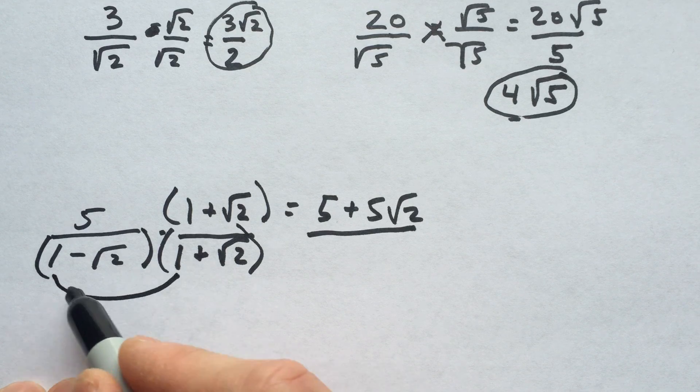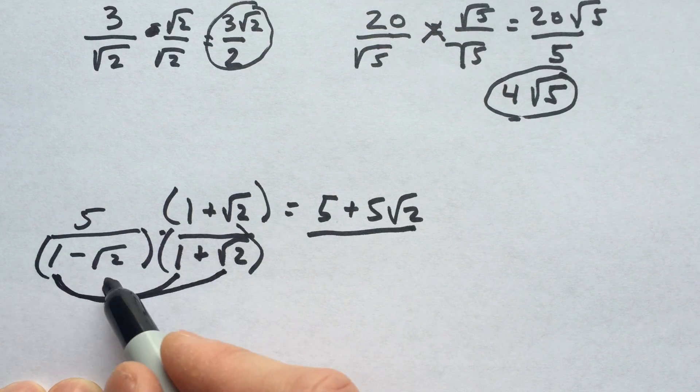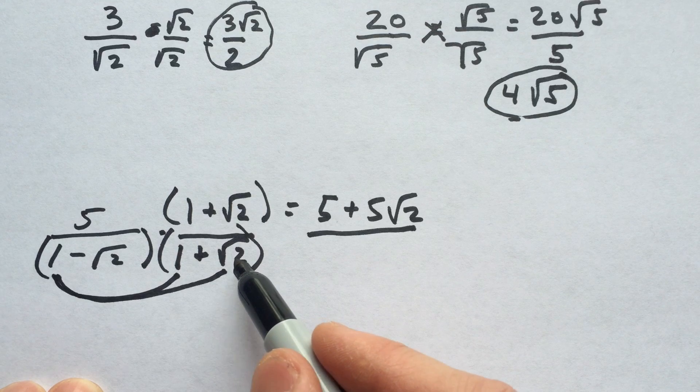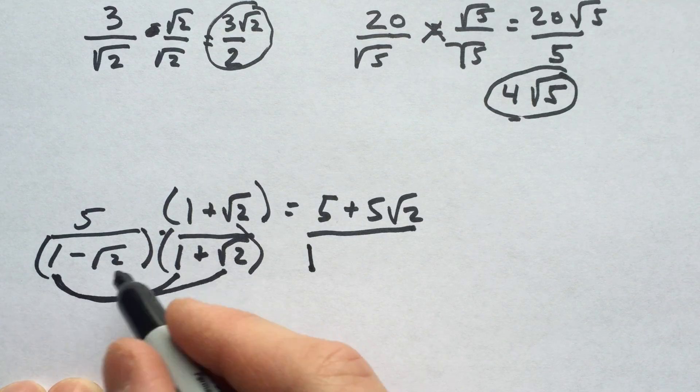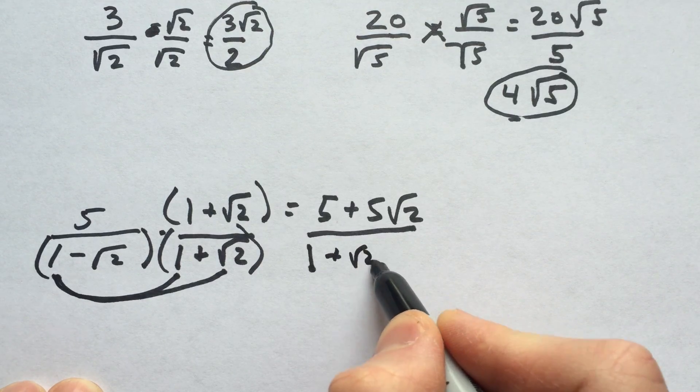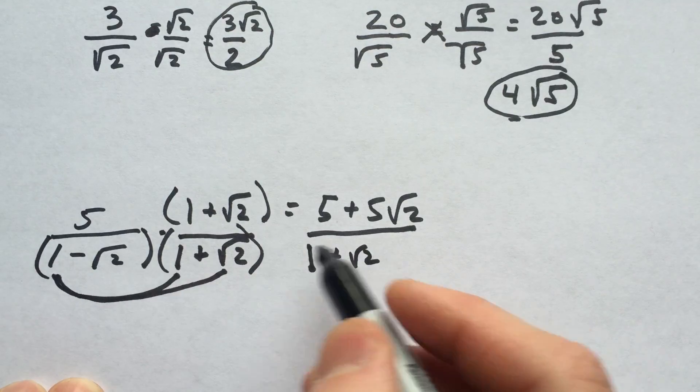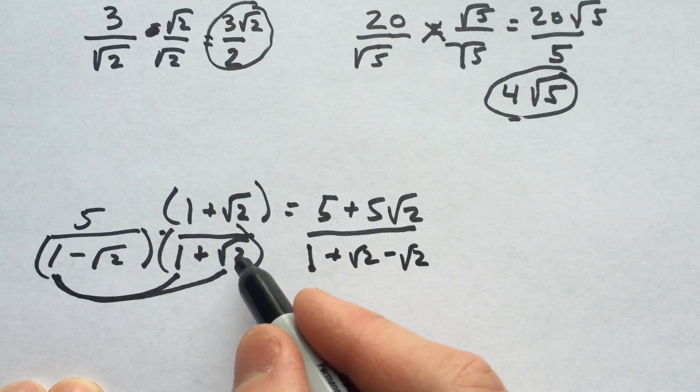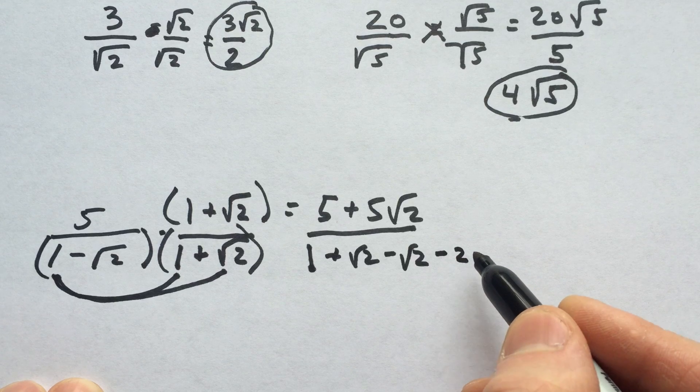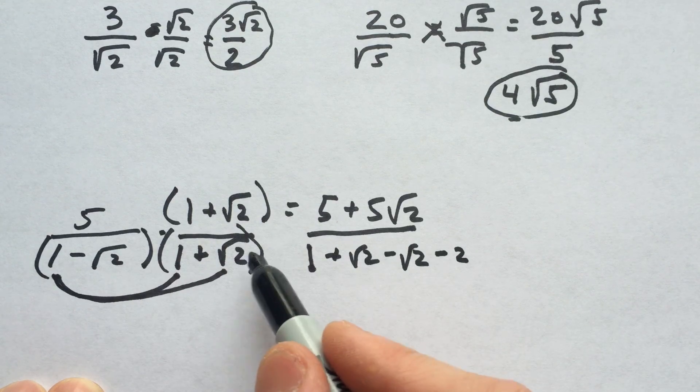Or you can think of doing the distributive property with the 1 and then with the negative square root of 2. So if we do that, we get 1 times 1, then 1 times root 2, which is plus √2. Inside, that gives you negative √2. And then the last term, negative √2 times positive √2 is just negative 2, because the square root times itself gives you the number underneath.